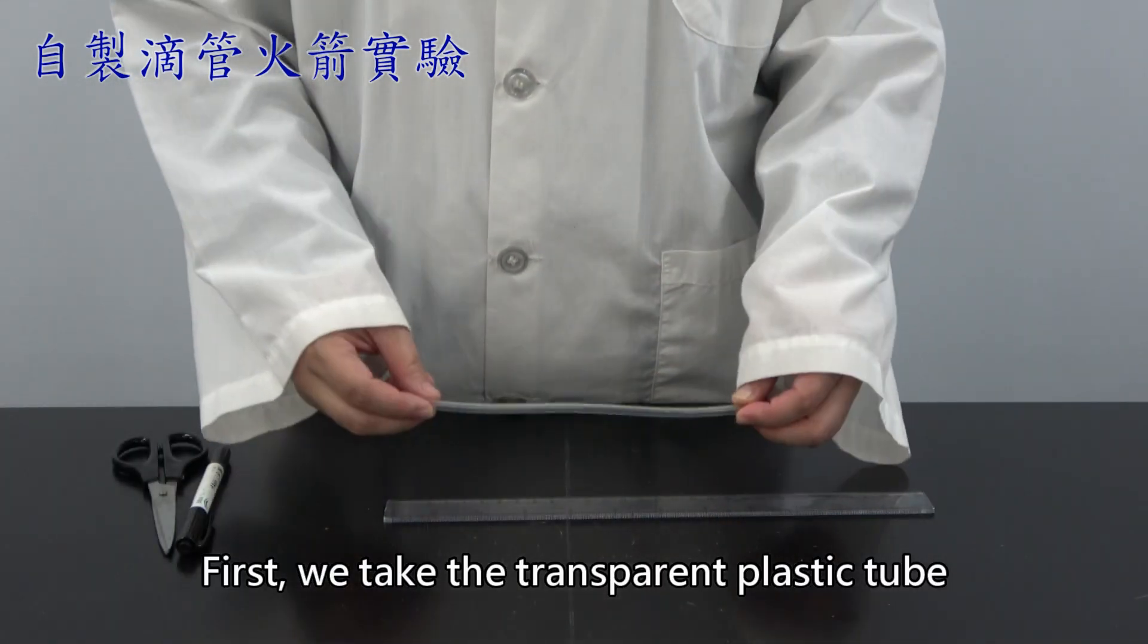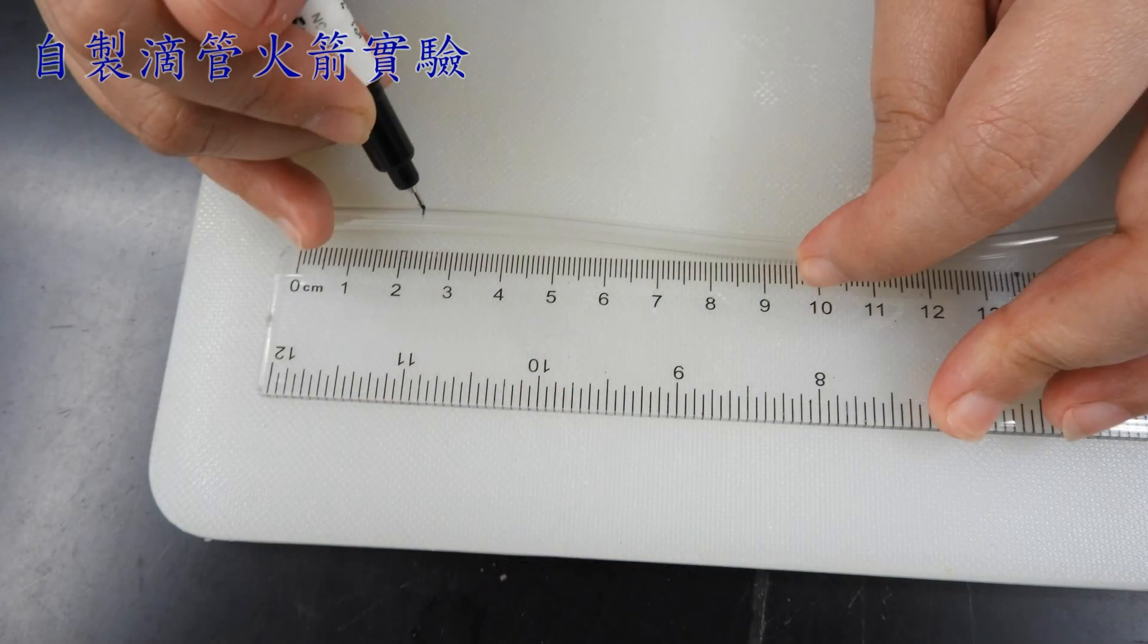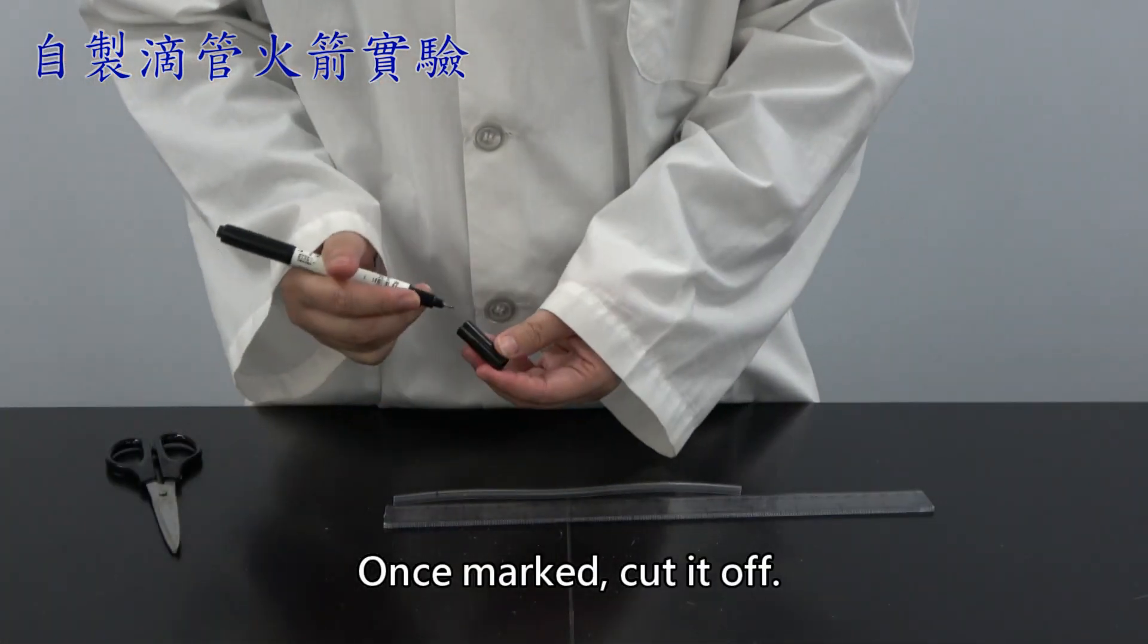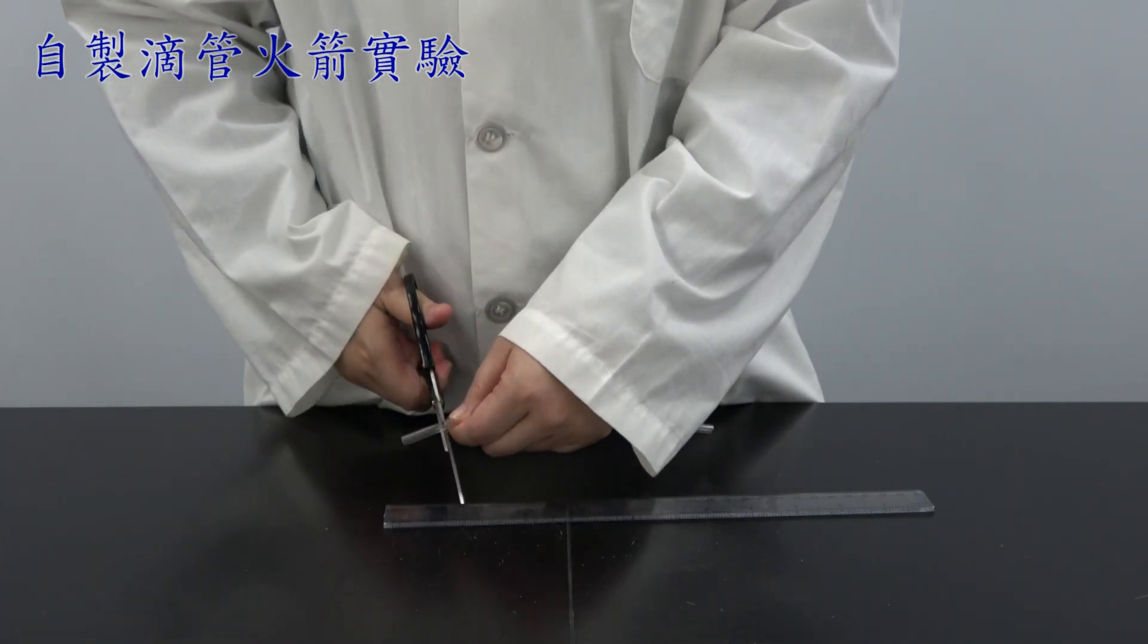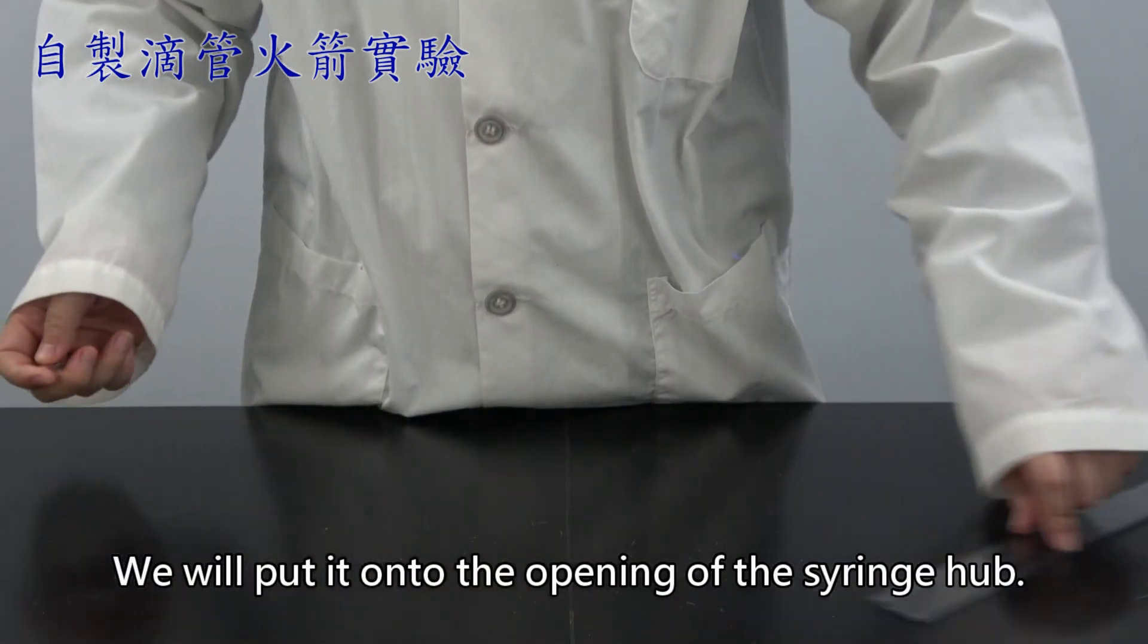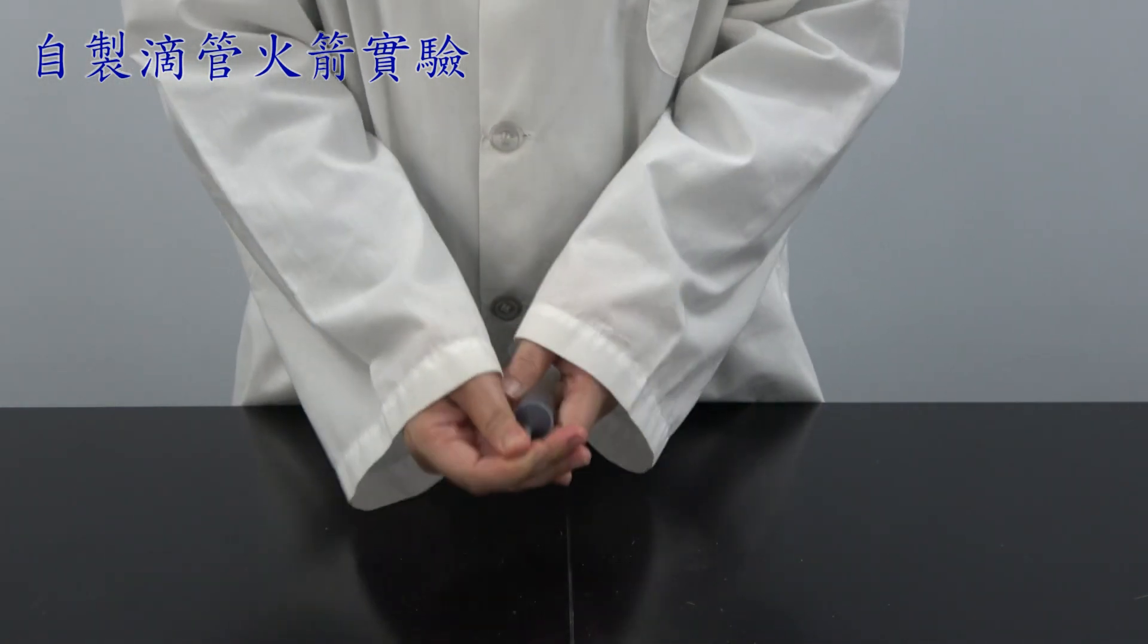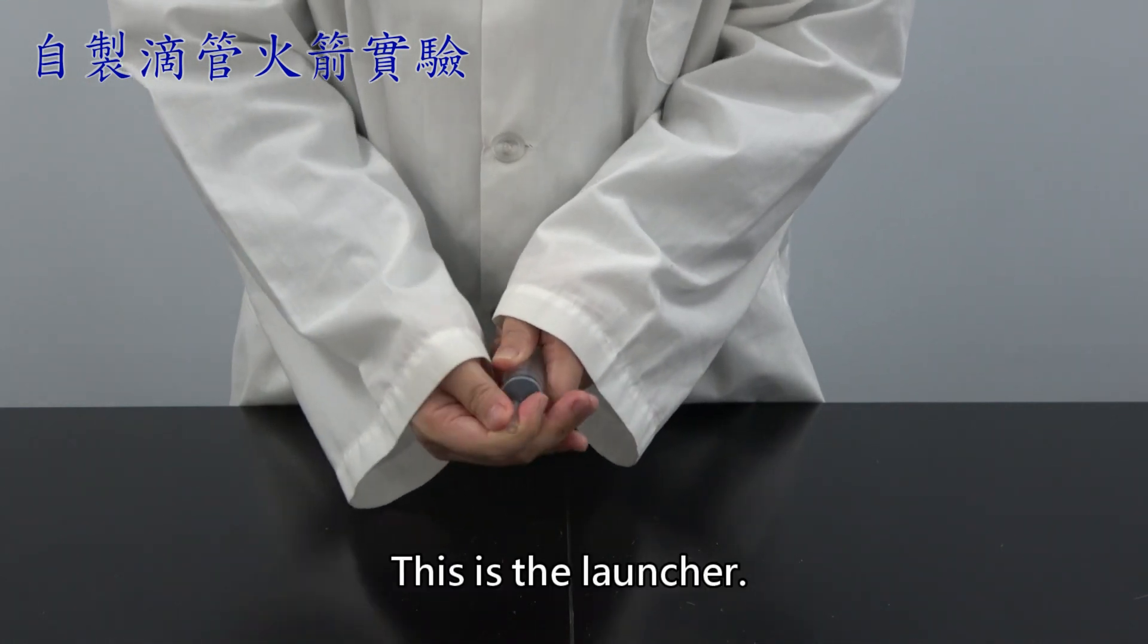First, we take the transparent plastic tube. Measure for about 2.5 cm. Make a mark on it. Once marked, cut it off. Once done, we will put it onto the opening of the syringe hub. Put it on like this. This is the launcher.